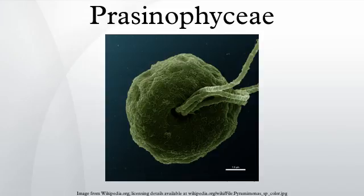The cells of many species are covered with organic body scales. Others are naked. One well-known genus is Ostreococcus, considered to be the smallest free-living eukaryote, found in marine waters worldwide. Prasinophytes have simple cellular structures, containing a single chloroplast and a single mitochondrion. The genomes are relatively small compared to other eukaryotes.